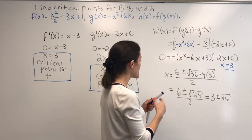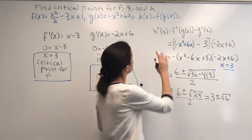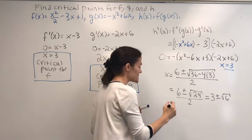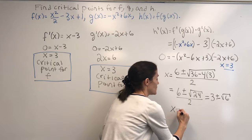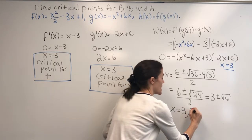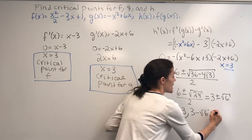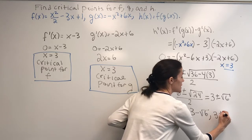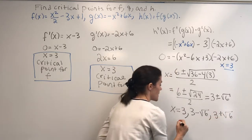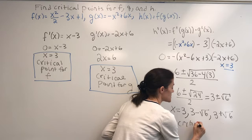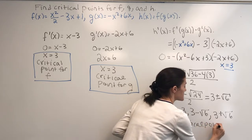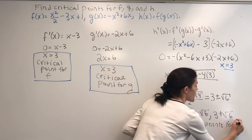So you see, we have 3 critical points for the composition. We have 3, we have 3 minus the square root of 6, and we have 3 plus the square root of 6. These are the critical points for h.